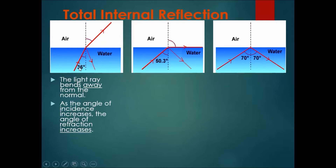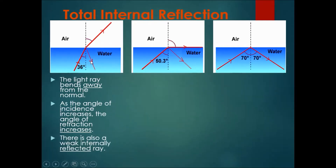For example, if this angle of 36 becomes 40, then this line would be even more close to the water surface. Also, over here, there is a weak internally reflected ray.